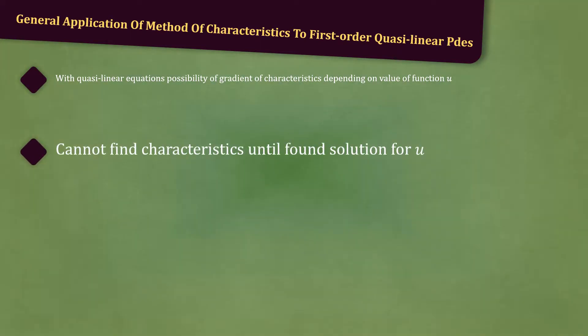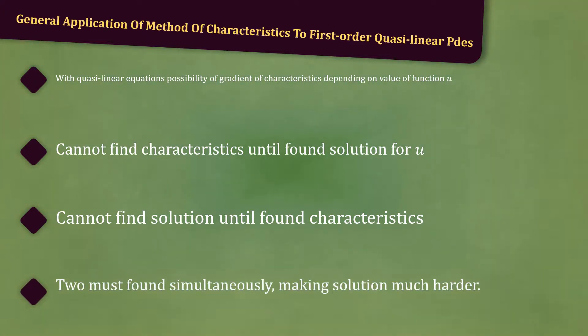This means we cannot find the characteristics until we have found the solution for u. But we cannot find the solution of u until we have found the characteristics. Thus, the two must be found simultaneously, making the solution much harder.